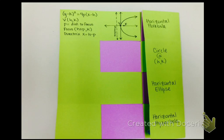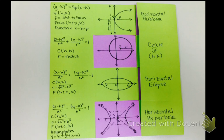Then I'm just going to go in and fill in the information for a circle at HK, horizontal ellipse, horizontal hyperbola with their pictures and their equations. So you can see the graphs of each of those conic sections and their equations written out to the side.